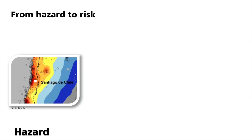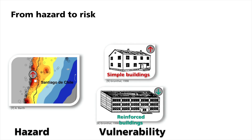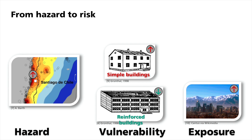Santiago de Chile, the capital of Chile. You have already seen on the map that strong earthquakes occur nearby. This means that the hazard level is high. For risk, two other things are also important: firstly, the vulnerability of the city; secondly, the exposure, which refers to the asset values in the area of effect of the event.